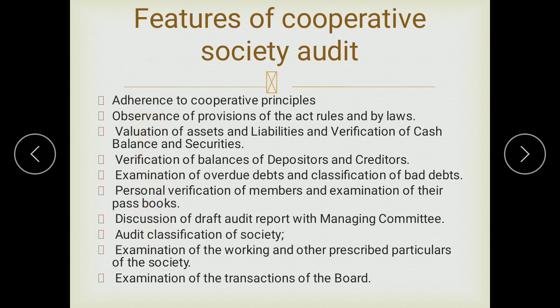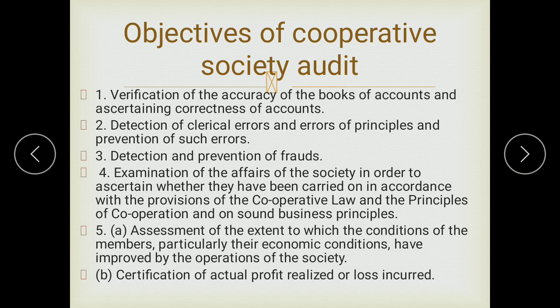Now for the objectives of cooperative society audit: the first objective is verification of the accuracy of the books of accounts and ascertaining correctness of the accounts. We have to check whether the prepared accounts are accurate, whether they are backed by supporting documents and vouchers, and whether any information has been omitted. Accounts must be checked as per the rules and regulations and the principles of the double entry system.